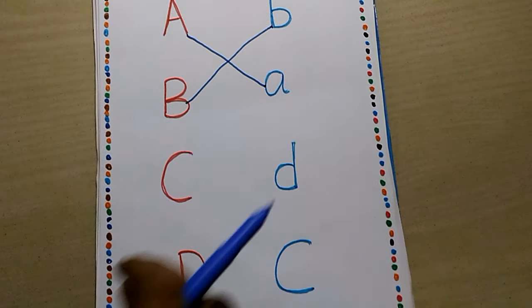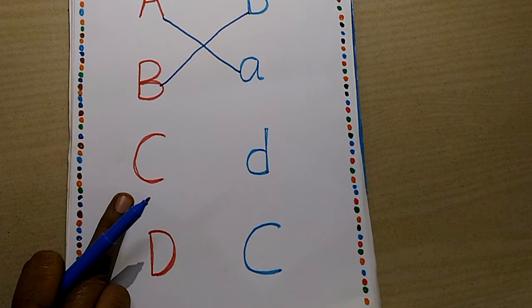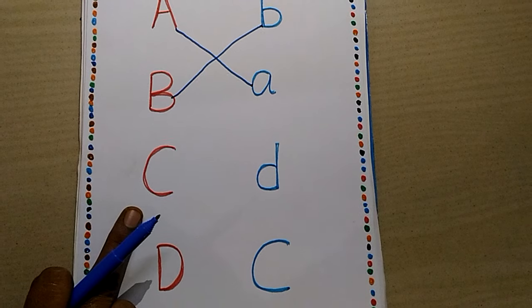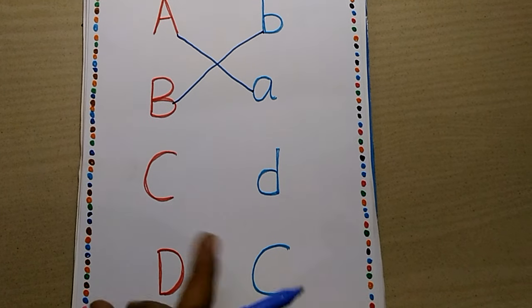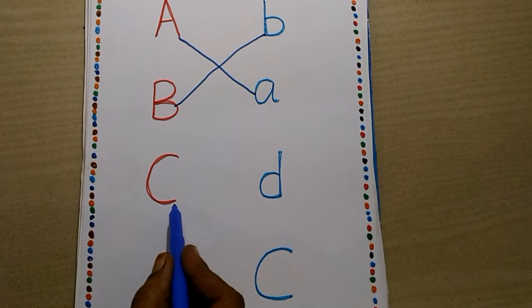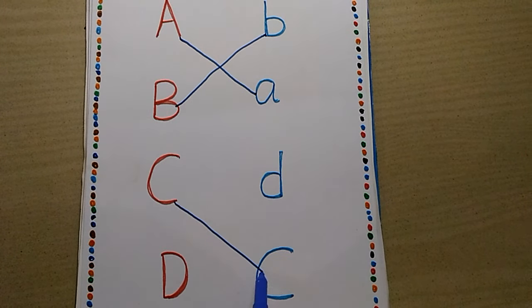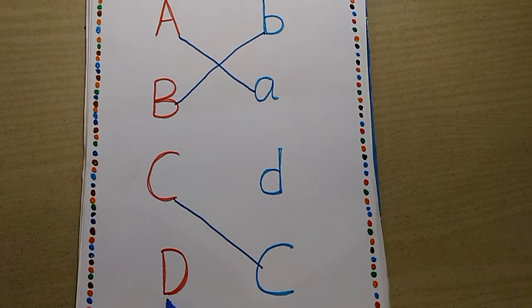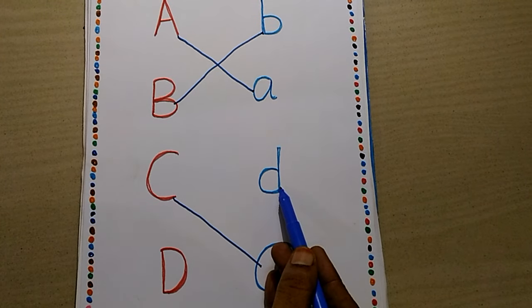What is this? C. Where is small c? Here. Capital D, small d.